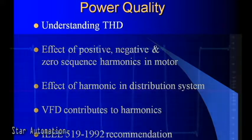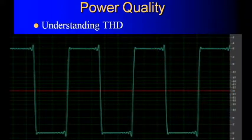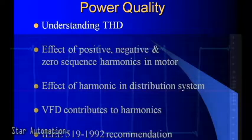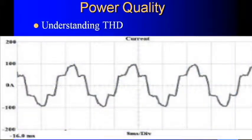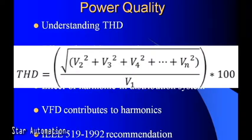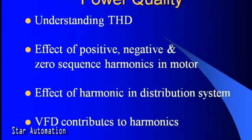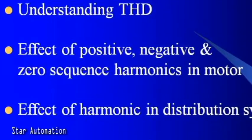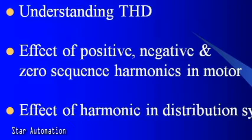A voltage or current that is periodic but not purely sinusoidal will have higher frequency components contributing to harmonic distortion. In the real world, sinusoidal voltages and currents are not perfectly sinusoidal, so some harmonic distortion will be present. THD is defined as the ratio of the equivalent RMS voltage of all harmonic frequencies from the second harmonic onward over the RMS voltage of the fundamental frequency. Harmonics are grouped into positive, negative, and zero sequence components.